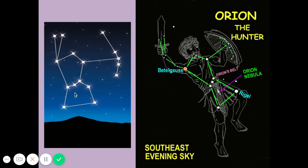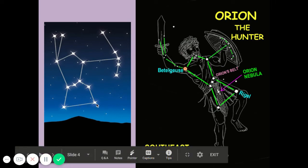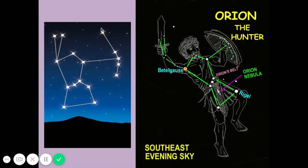Orion's belt — three stars going across — is very noticeable in the night sky and easy to identify. You can also see stars and even a nebula making up the sheath or sword hanging off his belt. Here are his knees, chest, and head. The image sometimes depicts a shield, sometimes a bow and arrow, and in some versions he holds a club or has a bear over his shoulder. Betelgeuse is in the upper left, the Orion Nebula — a cloud of dust and gas where new stars can be born — is in the sword area, and Rigel is at the lower right.